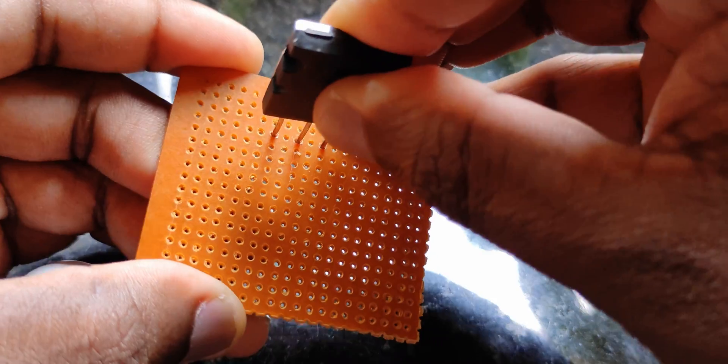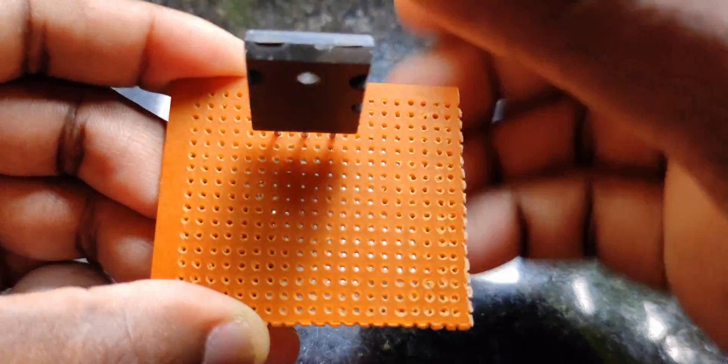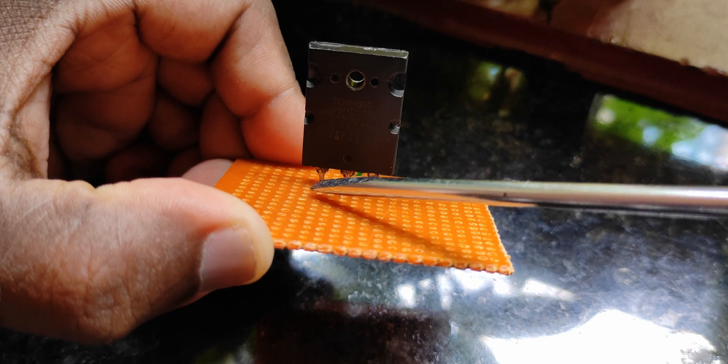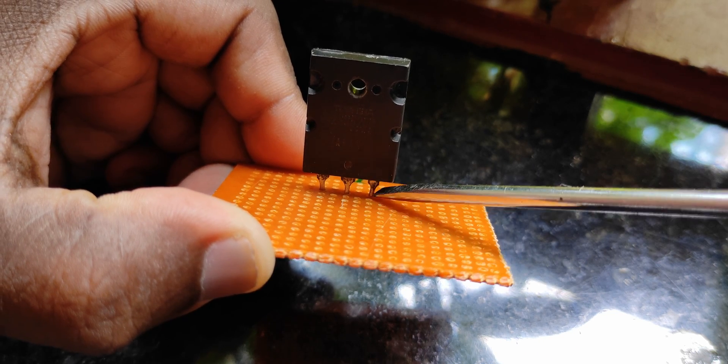This is the first step. Take a PCB and set the transistor like this and bend the terminals. Cut out the extras. According to the datasheet, this is the base terminal, this is the collector terminal, and this one is the emitter.